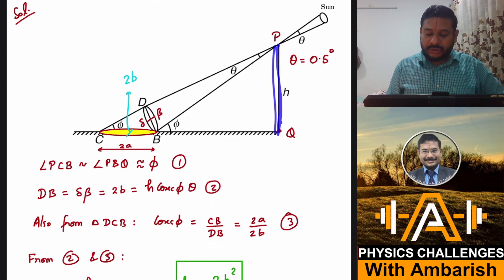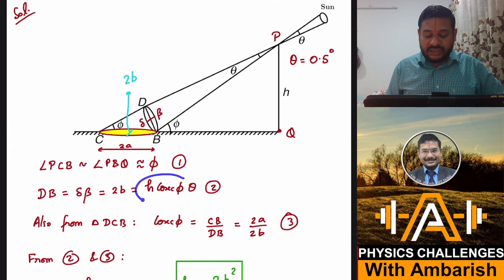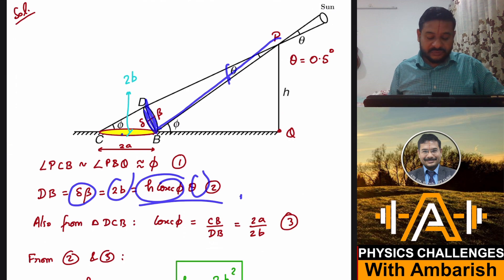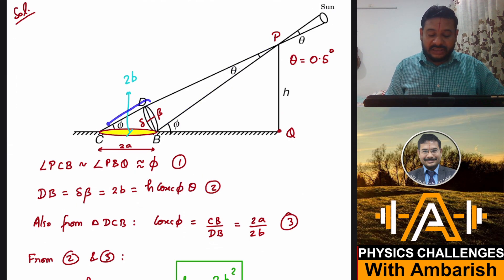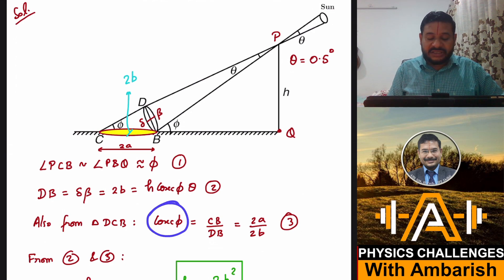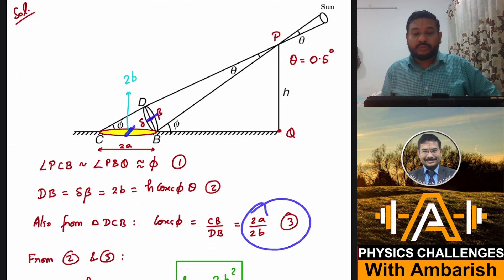So 2B can also be written in terms of H. This is H cosec phi, and dB equals H cosec phi times theta — that is, radius times theta for the arc length. So dB, which equals delta-beta, equals 2B. Now looking at triangle DCB, cosec phi equals CB over dB. CB is 2A and dB equals 2B. So cosec phi equals 2A over 2B, which is A over B. That is equation 3.